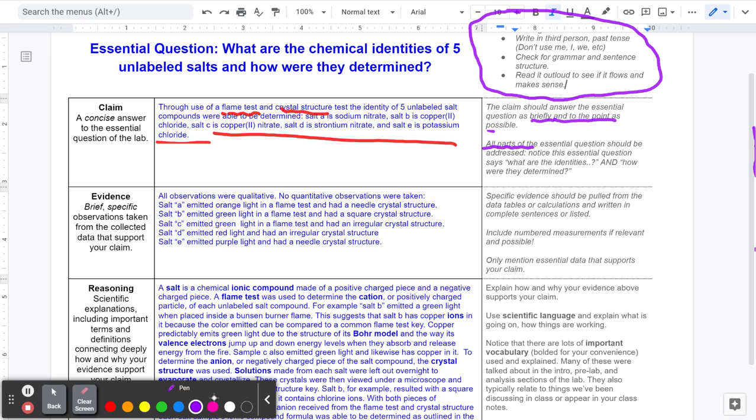The next thing to take a look at is the evidence. Evidence is brief, specific observations. It's multiple brief specific observations taken from the collected data. So this is where you're pulling information from your data table. You want to pull information from that data table, maybe even calculations. And you can write them as bullet points or listed sentences and things like that. Or you can just list them out as you see here.